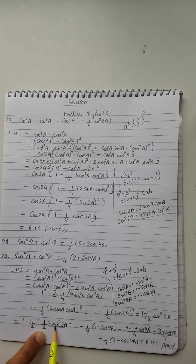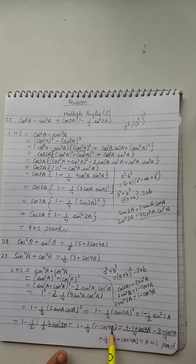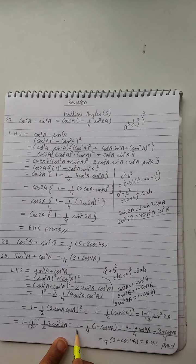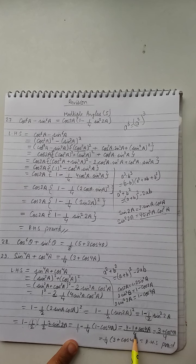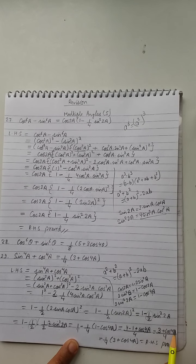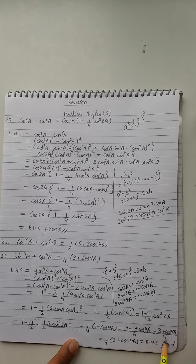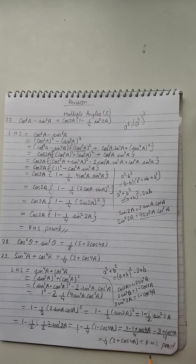Instead of 2sin²2a we write 1 - cos4a. We take LCM of 1 and 4, which is 4, and simplify: 4 minus 1 is 3, cos4a is copied as it is. We ultimately write this as (1/4)(3 + cos4a), which is the right hand side proved.